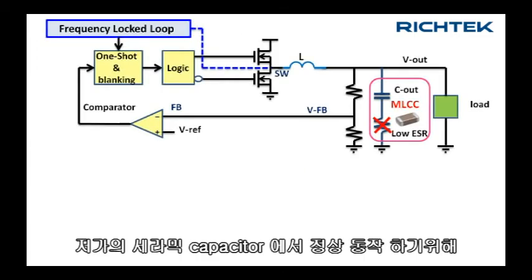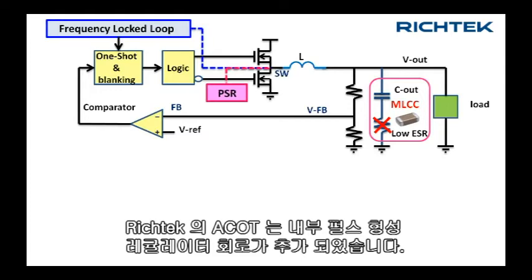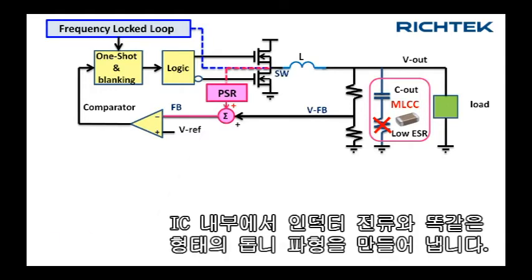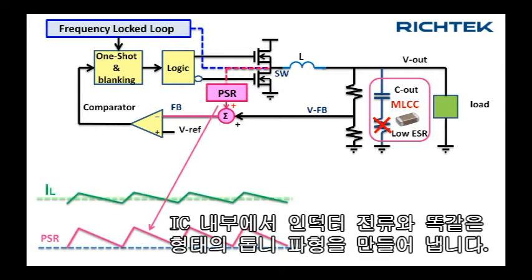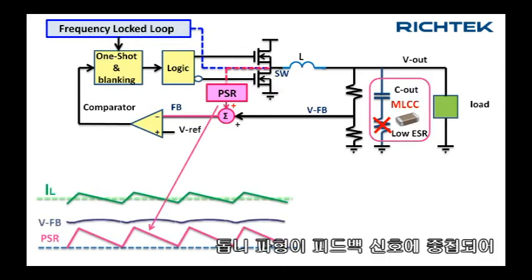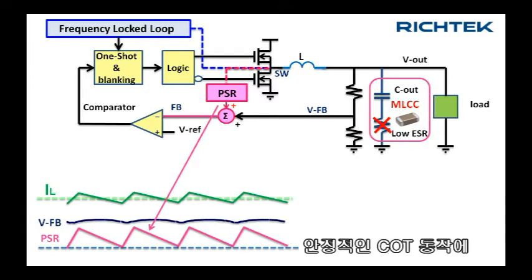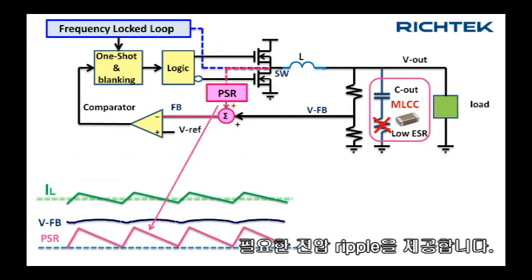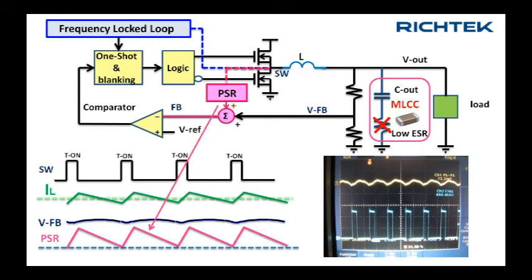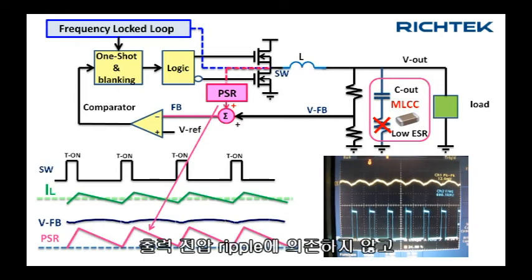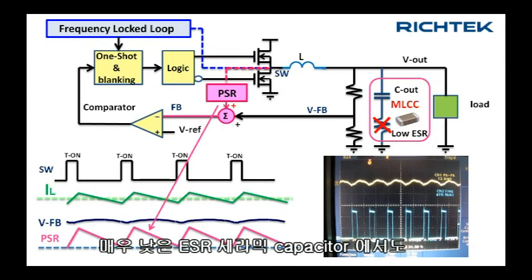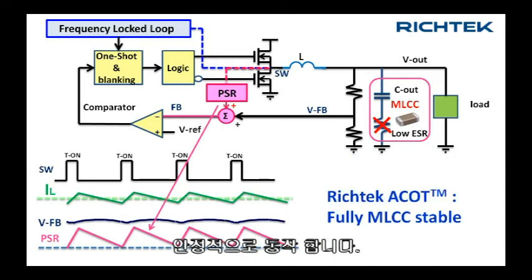In order to work with low-cost ceramic capacitors, RichTech's advanced COT has an internal pulse shaping regulator circuit, which generates an internal sawtooth with the same shape as the inductor current. This sawtooth is added to the feedback signal and provides the required ripple voltage for stable COT operation. The circuit operation no longer depends on the output voltage ripple and is stable with very low ESR ceramic capacitors.